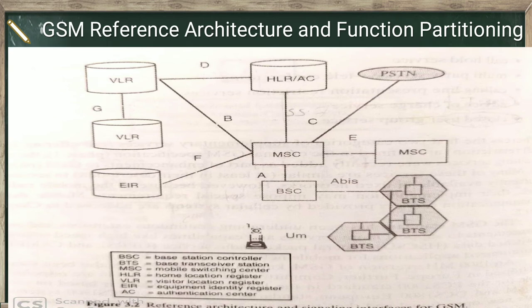This is the architecture of the GSM standard. In that architecture you can see different blocks: BSC — Base Station Controller, BTS — Base Transceiver Station, MSC — Mobile Switching Center, HLR — Home Location Register, VLR — Visitor Location Register, EIR — Equipment Identification Register, and AC — Authentication Center. In the next session we will discuss each of these blocks in detail.